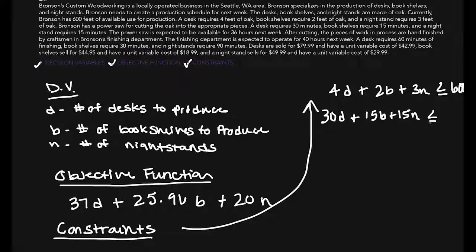a desk requires 30 minutes, plus the shelf requires 15 minutes, and the nightstand requires 15 minutes. Now, we're looking at a measurement of units in minutes here, whereas the power saw is expected to be available for 36 hours next week. So, what we're going to do to find out the total constraint here is 36 hours times 60 minutes, and that will give us 2,160 minutes for that constraint.